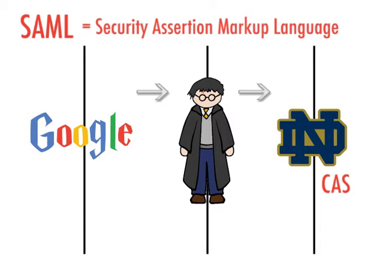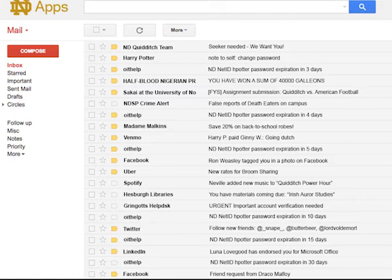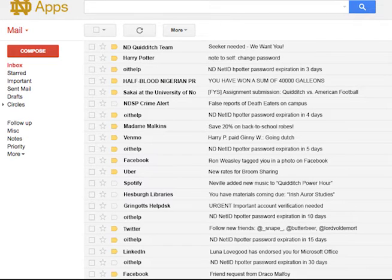This authenticates Harry using his username and password. Once authenticated, the request continues back to the identity provider to verify that Harry's account is allowed to access Google. It redirects Harry's browser back to Google, which accepts that Harry is who he says he is and that he is allowed in. This process is a typical service integration provided by the identity management team. There are other approaches to authentication and authorization, but SAML is the preferred standard for all integrations with Notre Dame's identity systems.